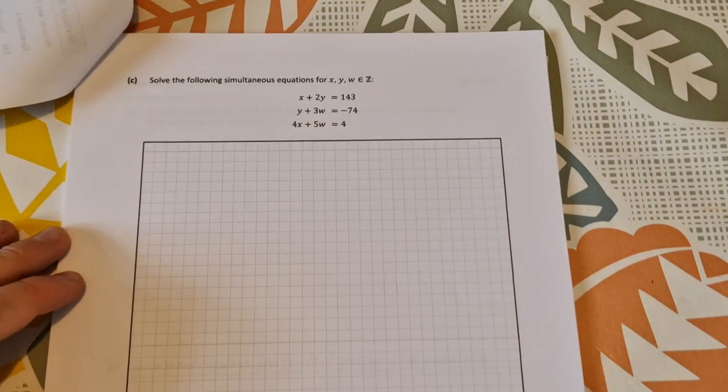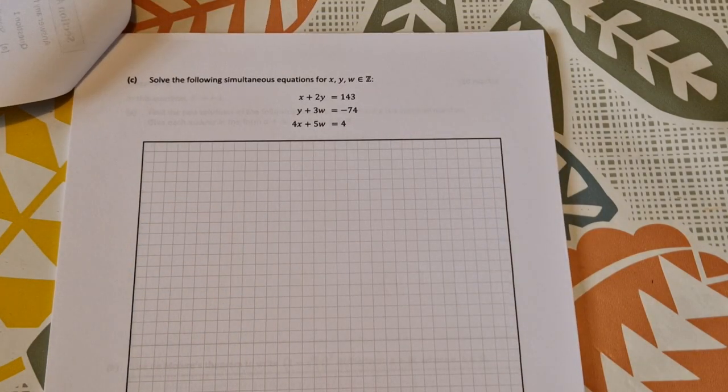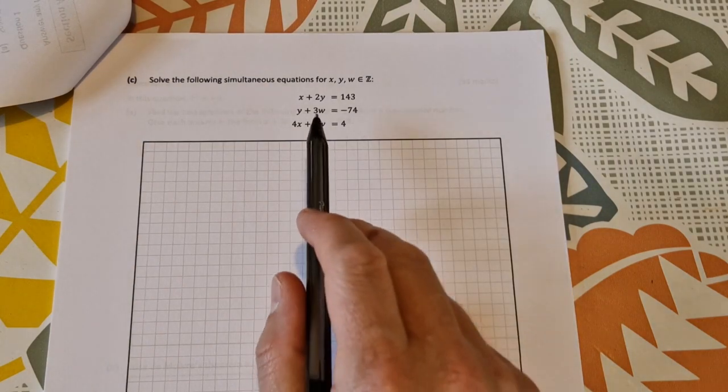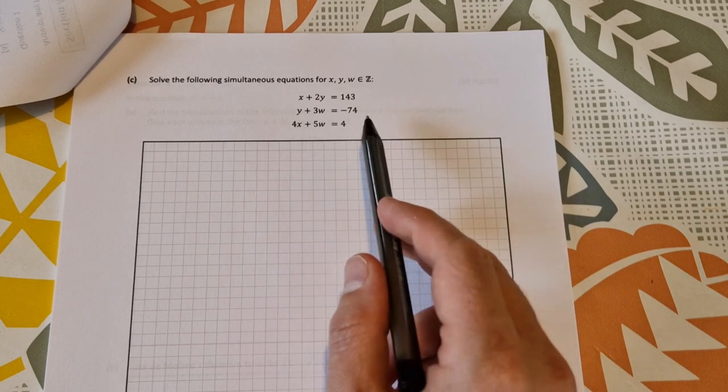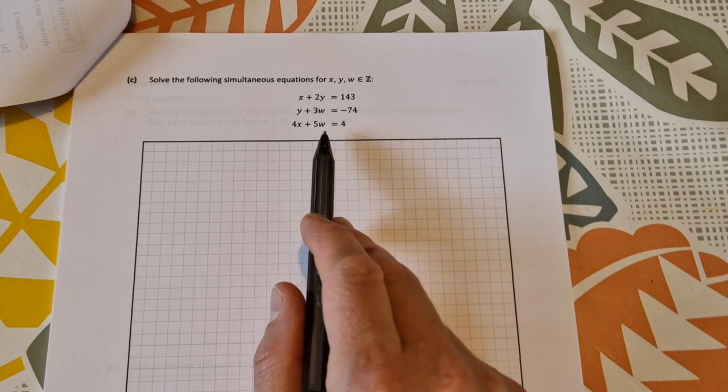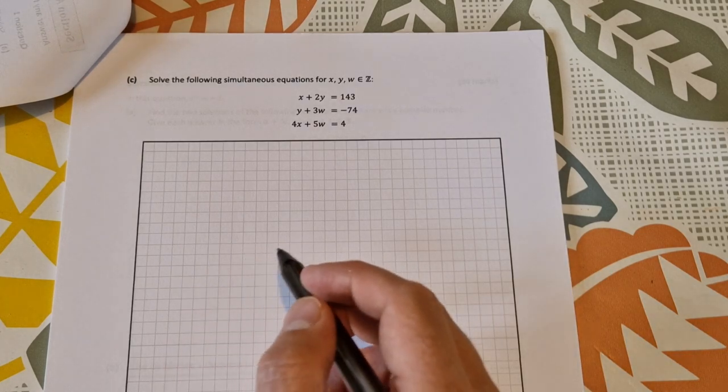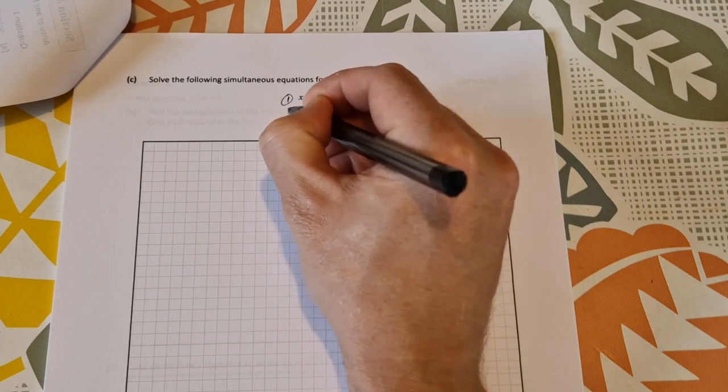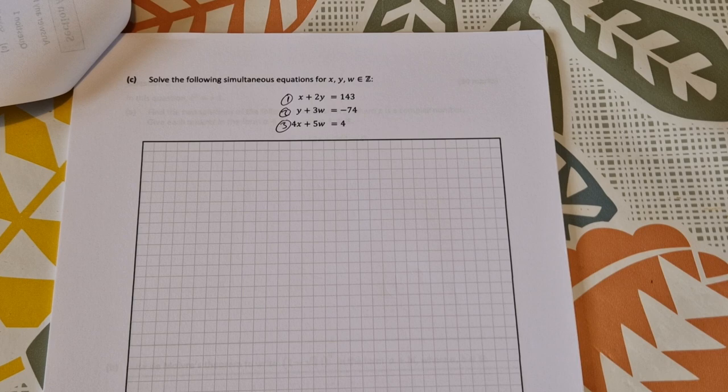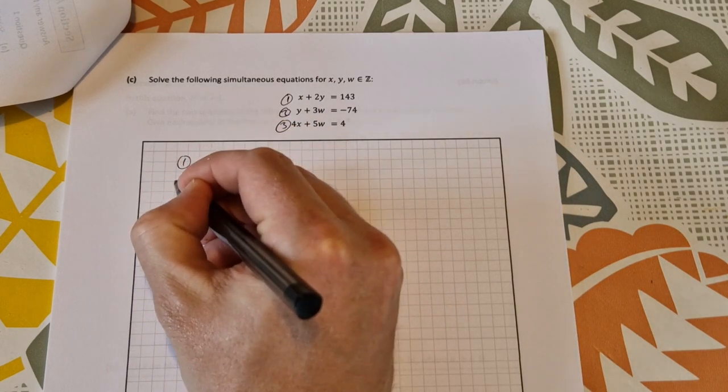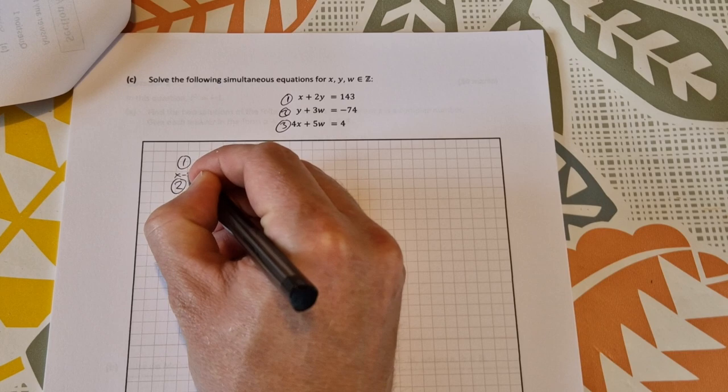Over to part C then part C is simultaneous equations in three variables so we have x plus 2y is equal 143, y plus 3w is equal to minus 74, and 4x plus 5w is equal to 4. So if we start with labeling them 1, 2, and 3 and I'm going to take equation 1 and I'm going to subtract 2 times equation 2.